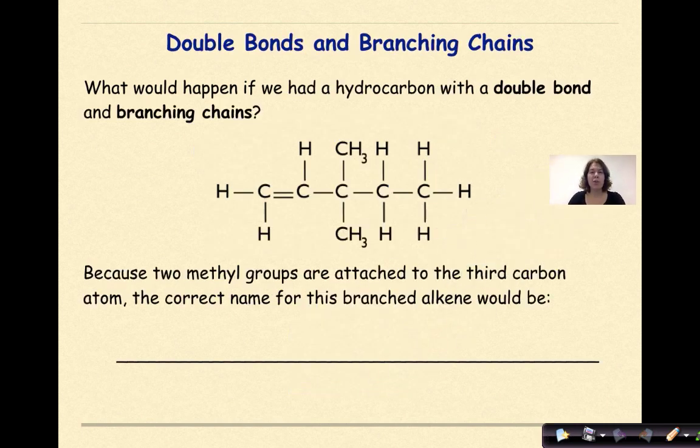Double bonds and branching chains. What would happen if we had a hydrocarbon with a double bond and branching chains like we do in this scenario? So let's look at this. Here is our double bond and we have a methyl group right here and we have another methyl group right here. Because two methyl groups are attached to the third carbon atom, the correct name for this branching alkene would be, well, let's figure that out.